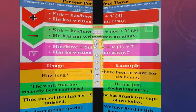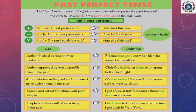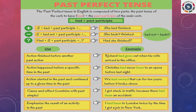Now the past perfect tense. The structure is subject plus had plus past participle of the verb. For example, 'She had finished.' The negative form is subject plus had not plus past participle of the verb — 'She hadn't finished.' The question form is 'Had she finished?' The usage of past perfect: it describes an action that finished before another past action. If two actions are there, past perfect is used for the one before the past action.